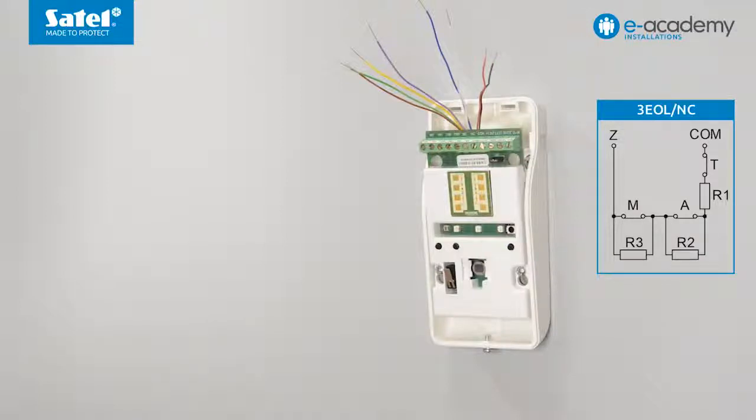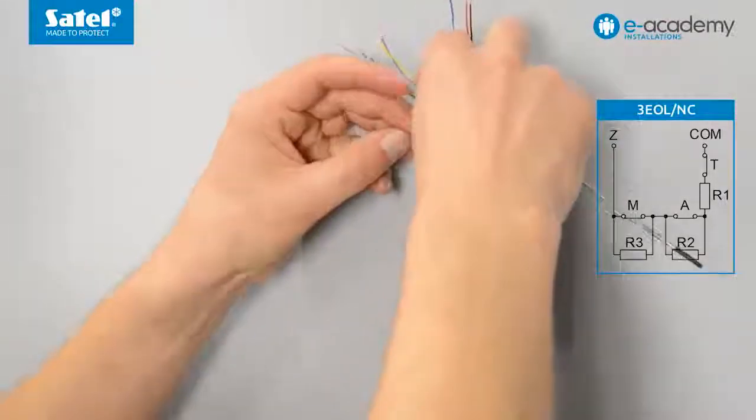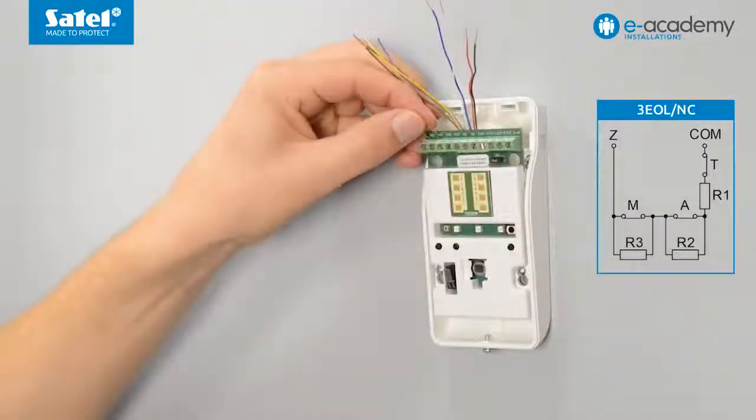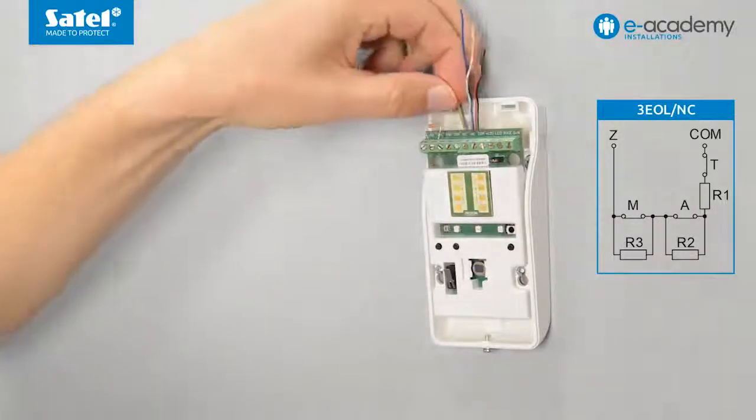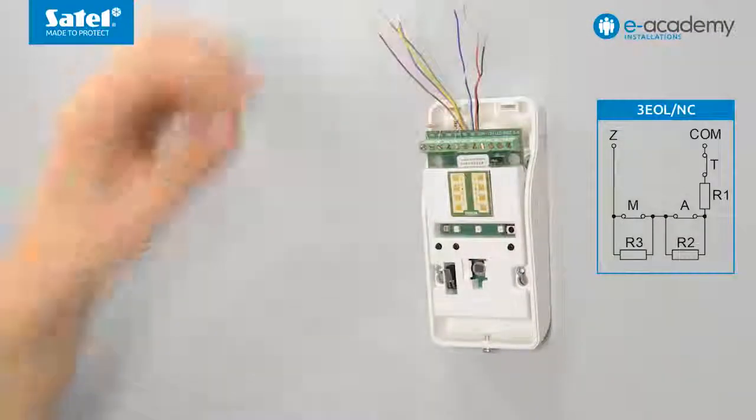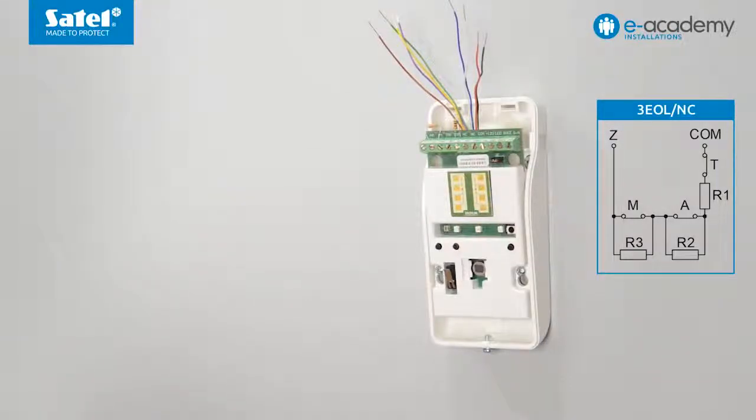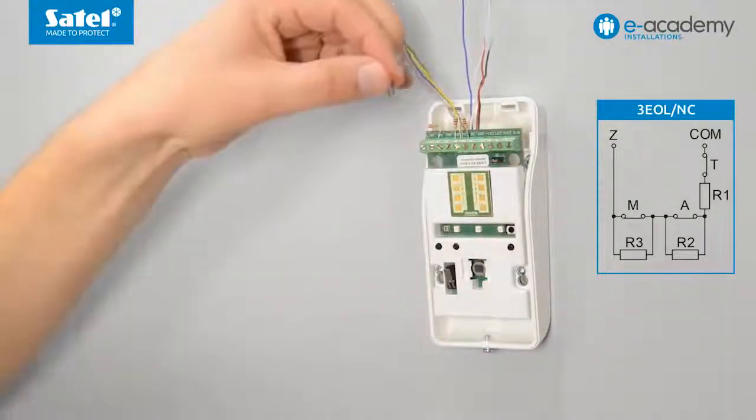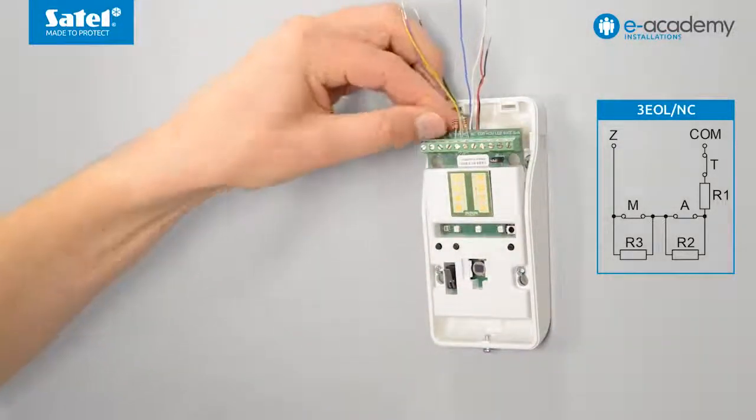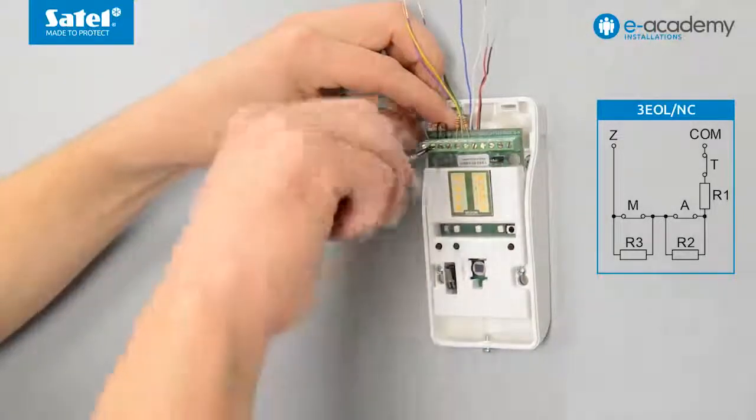Connect the R3 2.2 kilo ohm resistor between the anti-masking terminals. Connect the R1 1.1 kilo ohm resistor between the tamper terminal and the alarm terminal. Connect the R2 1.1 kilo ohm resistor between the alarm terminals. Make a bridge between the anti-masking terminal and the tamper terminal.